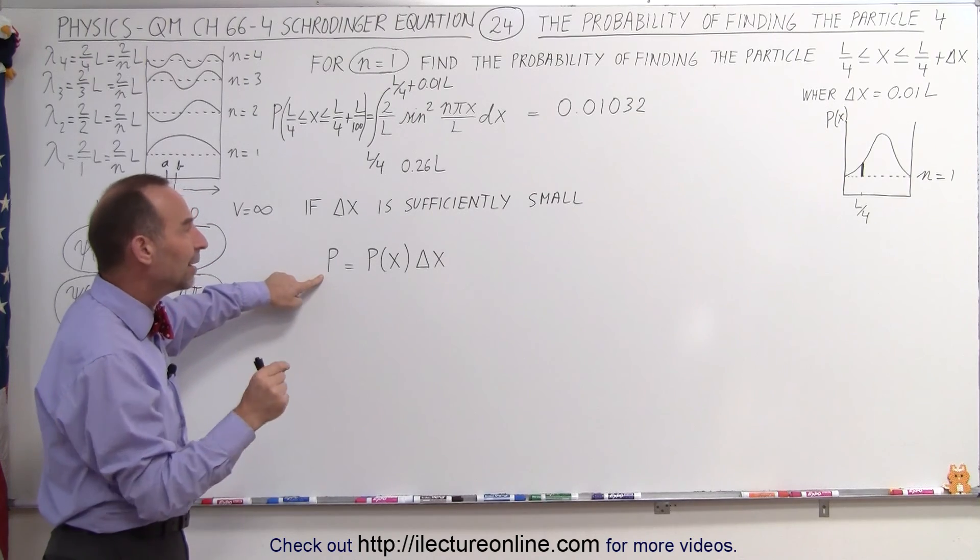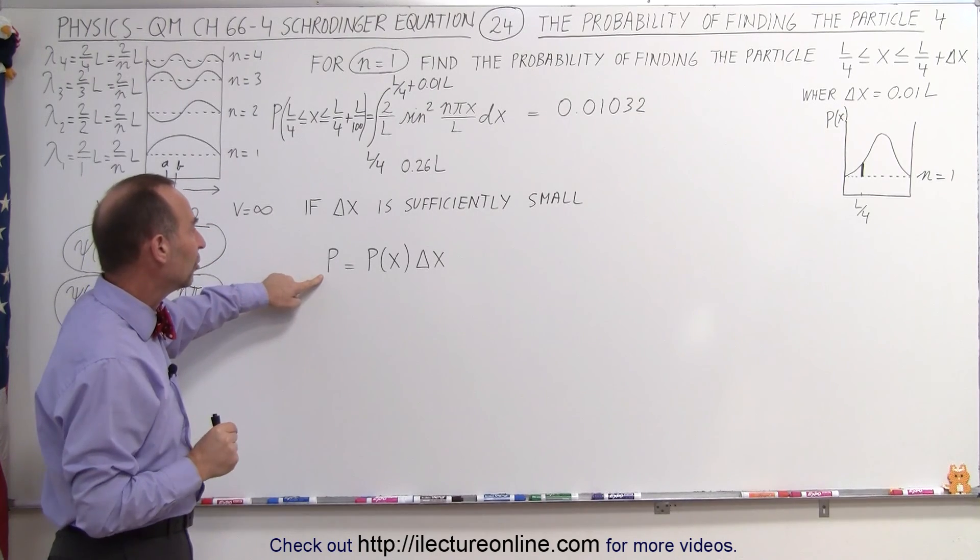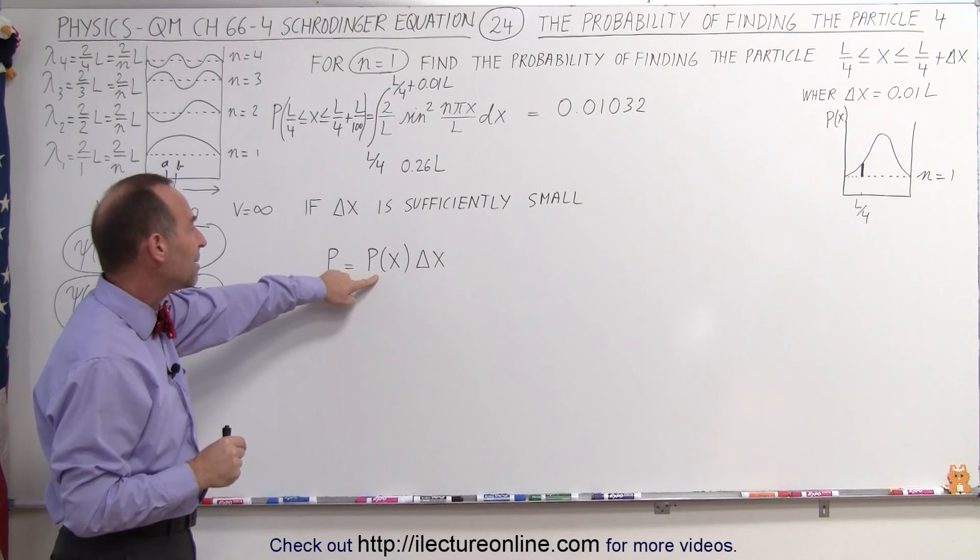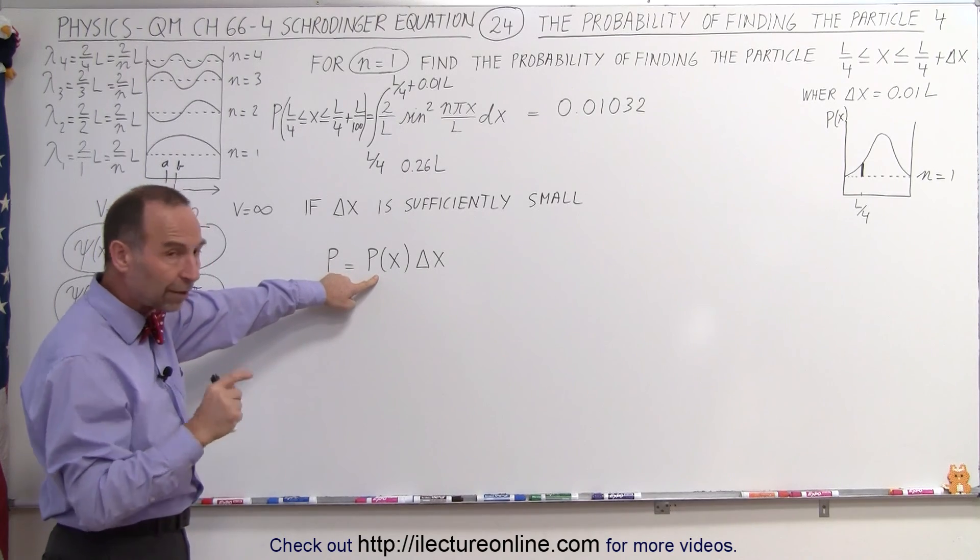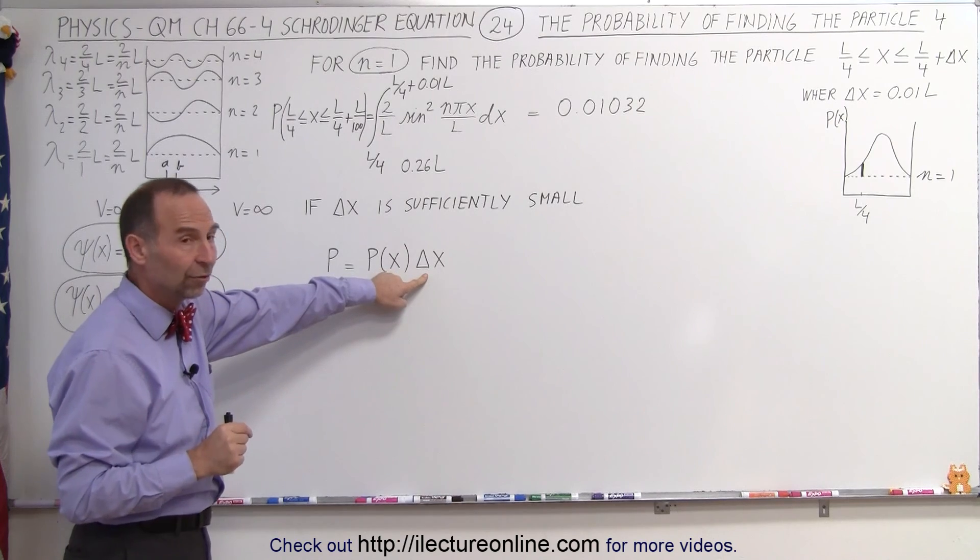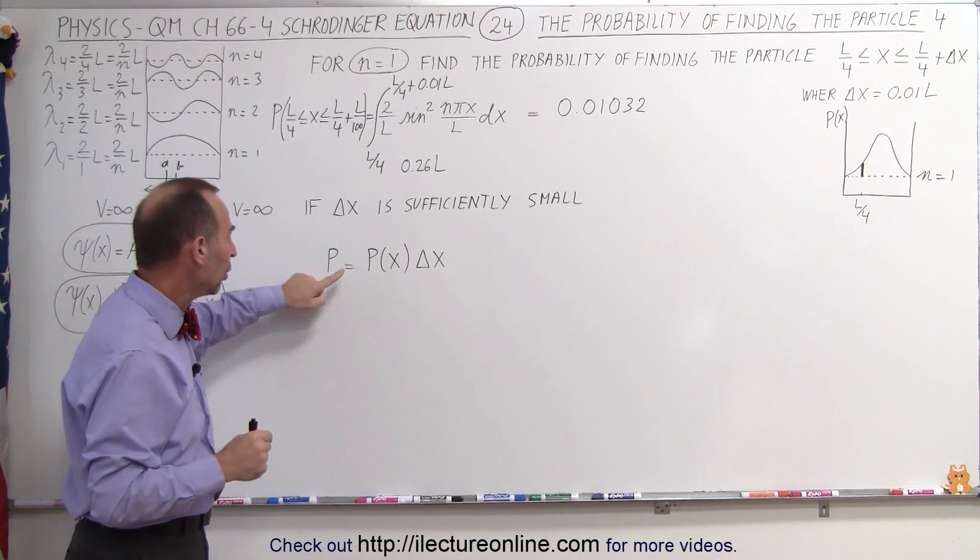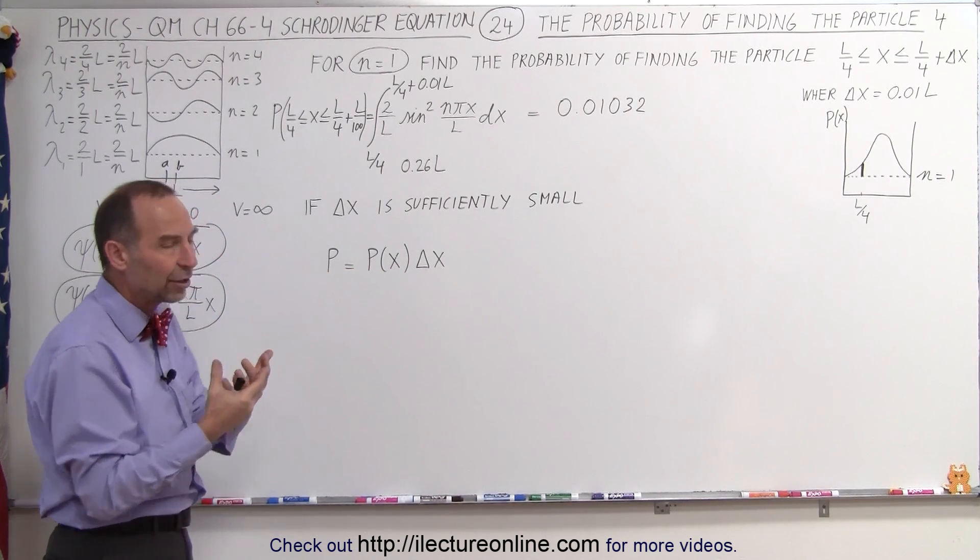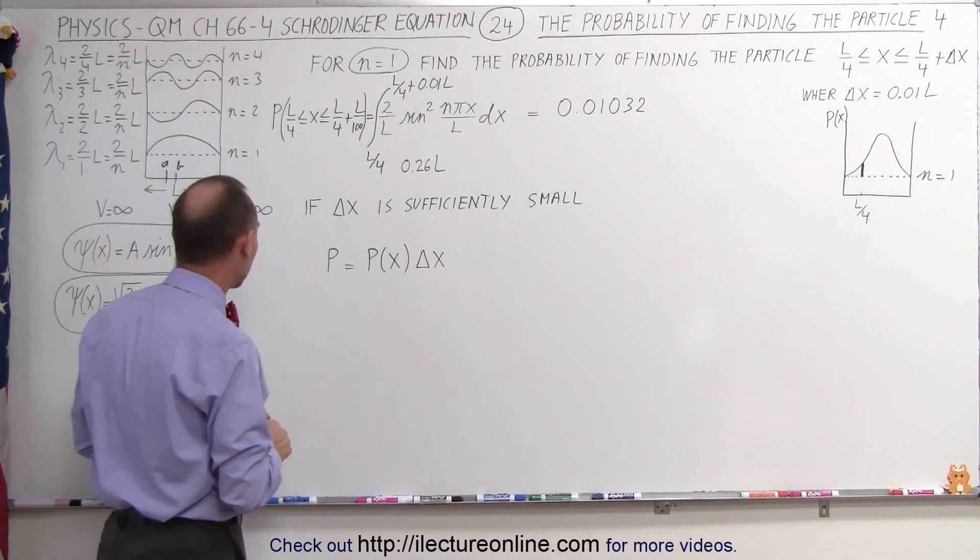To find the probability of finding it at a particular location, we can simply take the probability function and then multiply it by delta x. Of course, as delta x gets very small, we'll get the exact value of that probability. You'll see in a moment how that works.